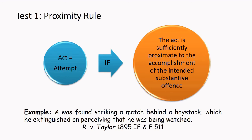Test 1 — Proximity Rule. It says the act is an attempt if the act is sufficiently proximate to the intended substantive offence. That means the act under question must be very closely attached to the intended substantive offence — not remotely connected, but immediately connected. If that can be established, then we can say that the act falls under the category of attempt and not preparation. As the term proximity suggests, we are dealing with the nearness of the act to the intended substantive offence.